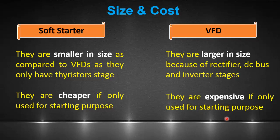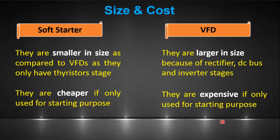In summary, a VFD provides continuous control over motor speed, torque, and energy efficiency, while a soft starter primarily assists in reducing the starting current and torque during motor startup, with no speed control capabilities. The choice between a VFD and a soft starter depends on the specific motor control requirements of the application.